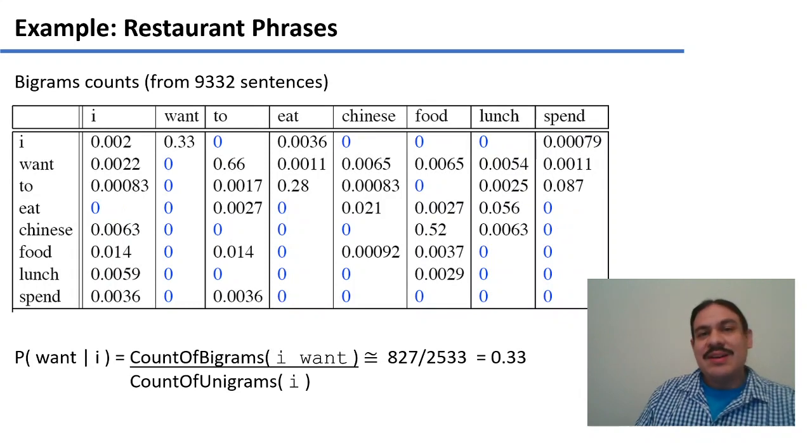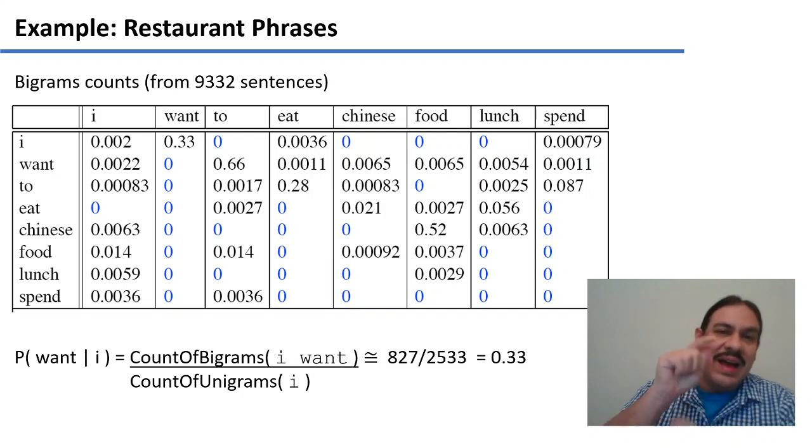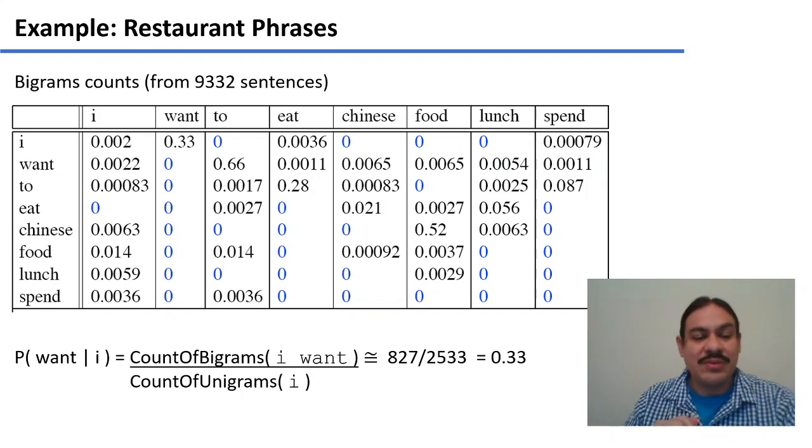From this, we could derive the probability of the bigrams. So if we want the probability of I want, which is the probability of want given I, we need to count the number of bigrams I want. So how many instances I have I want? And from the previous table, that was 827. And we need to divide it by the number of times we observe I, which is the count of the unigram I, which is 2533 times.